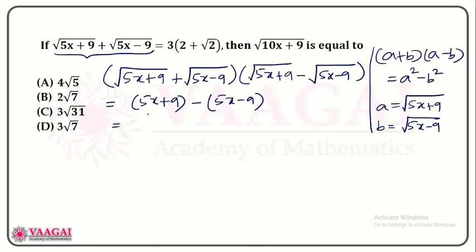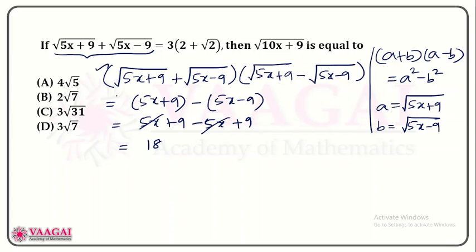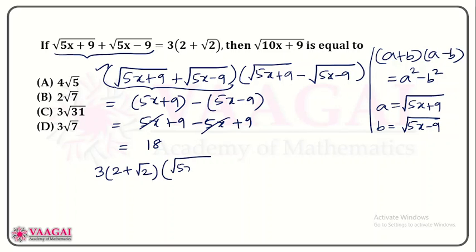Proceeding, we have 5x plus 9 minus (5x minus 9), distributing the minus inside. The 5x terms cancel, and 9 plus 9 gives us 18. So this expression simplifies to 18. The reason we start here is that we can now substitute, since we know the value of the original expression from the equation.